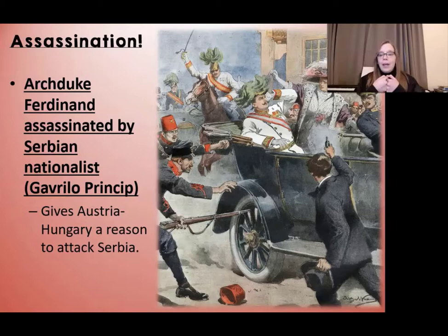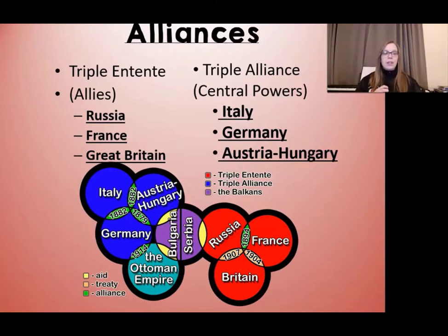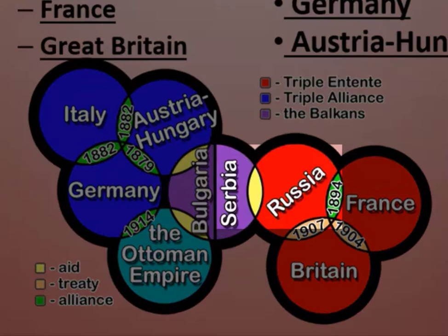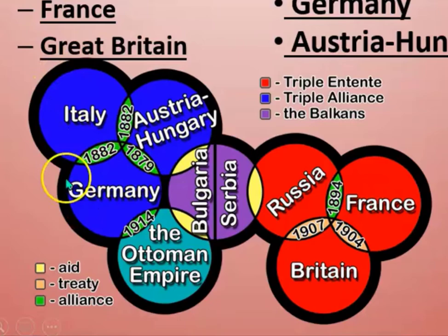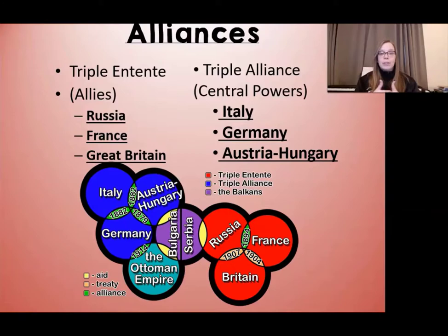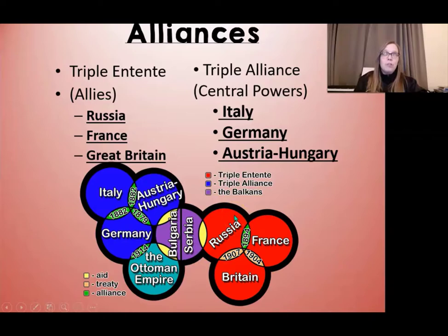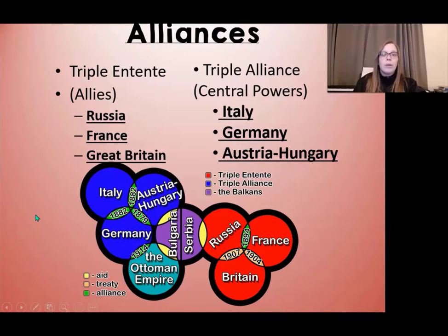This gave Austria-Hungary a reason to attack Serbia — they'd already had a bad relationship and now had their excuse. All the other countries declared war because they were tied together in alliances. Russia was on the side of Serbia and felt the need to join and support them. France and Britain were allies of Russia, so they joined on that side. Austria-Hungary was already allied with Germany, and Italy got involved too. This gave us two main alliances: the Triple Entente — Russia, France, and Great Britain — and the Triple Alliance, or Central Powers.